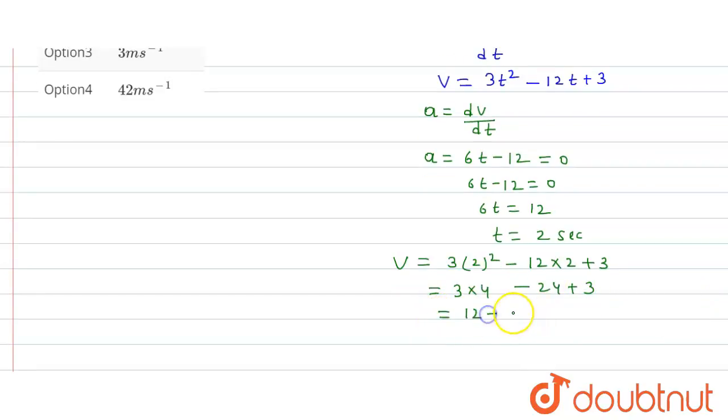From here, this will be 3 into 4 minus 24 plus 3. So this is equal to 12 minus 24 plus 3, that is equal to 15 minus 24, that is equal to minus 9 meter per second.